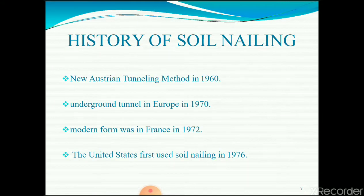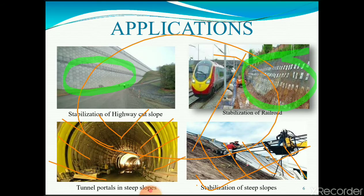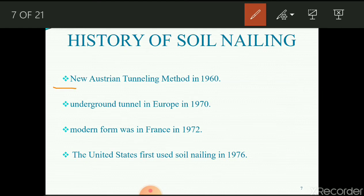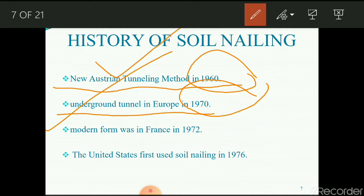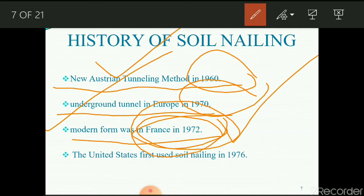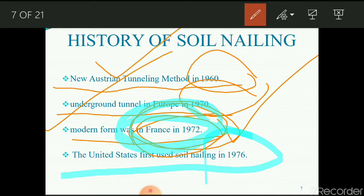Regarding the history of soil nailing: the New Austrian Tunneling Method was developed in Australia in 1960. The same technique was used for underground tunnels in Europe, developed in 1970. The modern technique was developed from France in 1972. The United States first used soil nailing in 1976. These are important historical facts that may appear in GATE or other examinations.